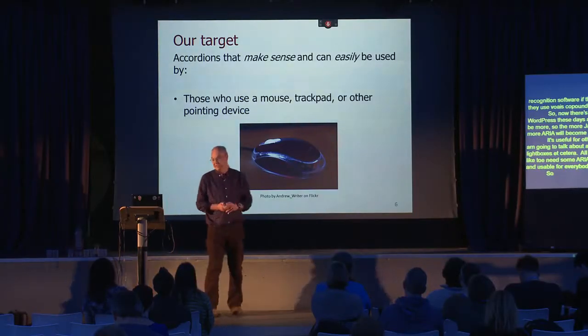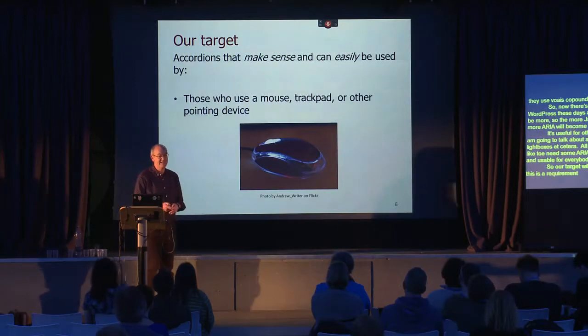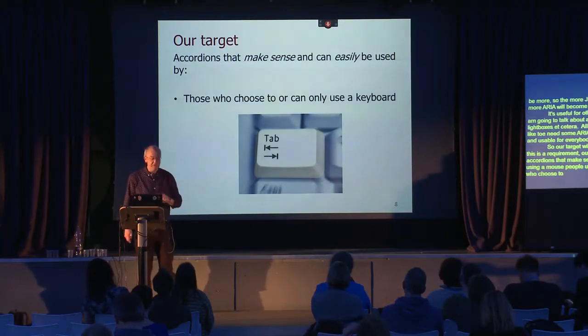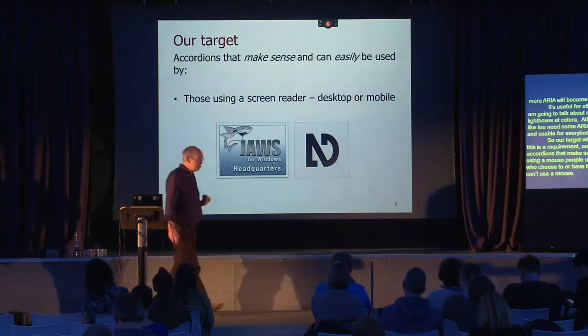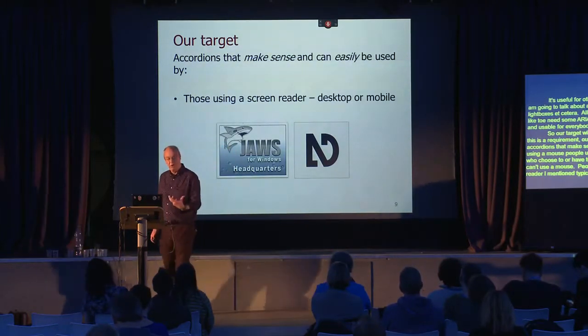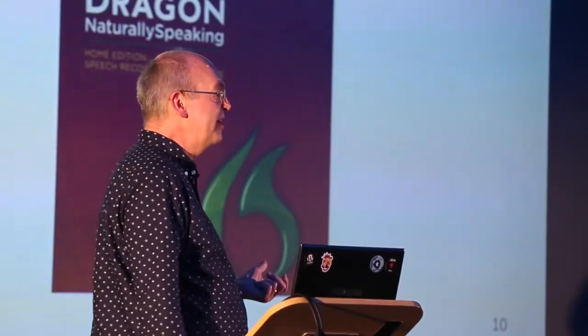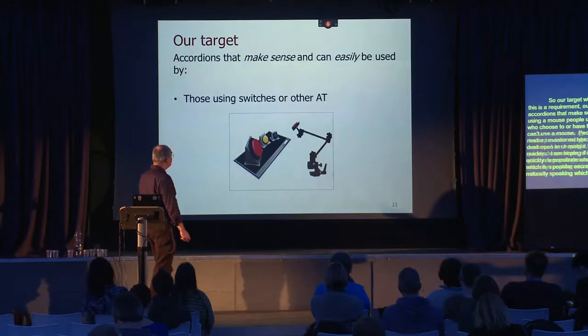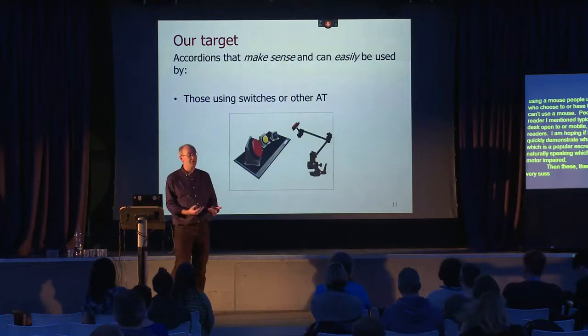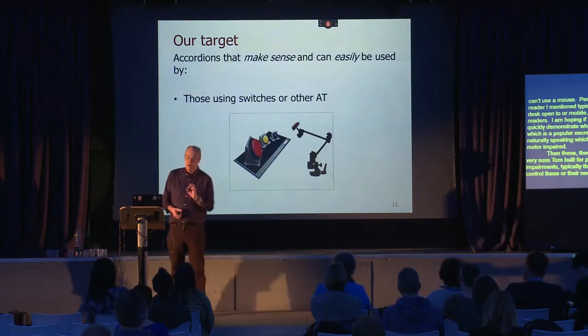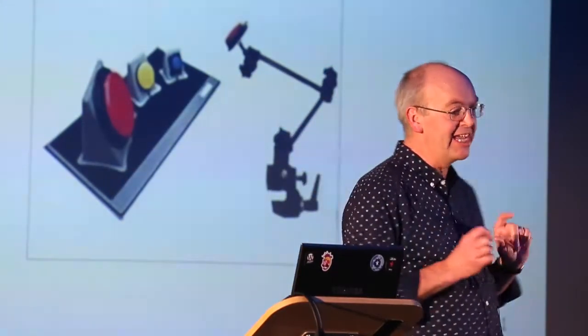Our target is to make accordions that make sense and can be used by people using a mouse, people using touch devices, people who choose to or have to use the keyboard only, and people using a screen reader — typically blind users, on desktop or mobile. We're also targeting Dragon Naturally Speaking for motor-impaired users, and switch devices, which emulate keystrokes — which is why keyboard interactivity is critical for accessibility.